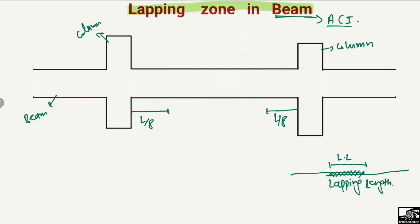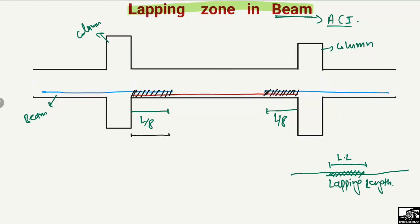If I draw the steel bars here, we can provide overlapping only at L/8 of the beam from each end. This bar can be overlapped only at the distance of L/8 from this end, and L/8 from this end. While in the mid region, no overlapping is allowed — no lapping of bars is allowed in that region.